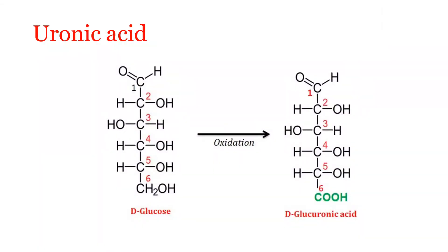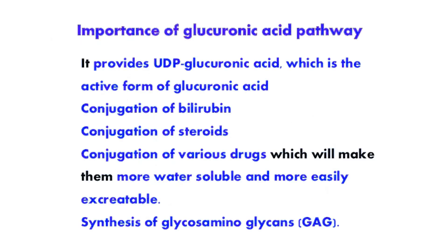Now, uronic acid. How do you get uronic acid? When glucose is oxidized at C6 — at the sixth position we already have a CH2OH primary alcoholic group — when this primary alcoholic group is oxidized, what we get is called glucuronic acid. So glucose upon oxidation of the sixth carbon gives glucuronic acid.